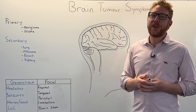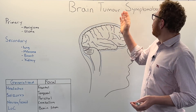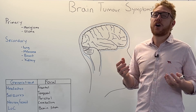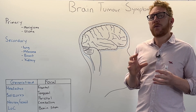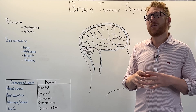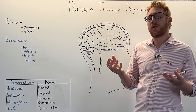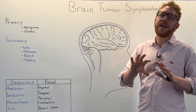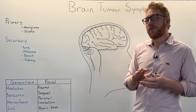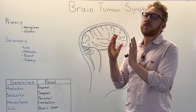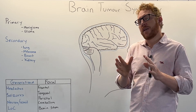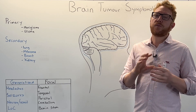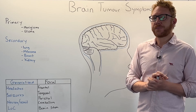Hi everyone, Dr. Matt here. In this video we're going to look at brain tumour symptomatology - essentially how brain tumours cause different types of symptoms. We'll start with a definition, then look at how we can broadly categorise brain tumours, and finally examine how the symptoms can be categorised into global or generalised effects, and more localised effects within the brain, which we call focal effects.